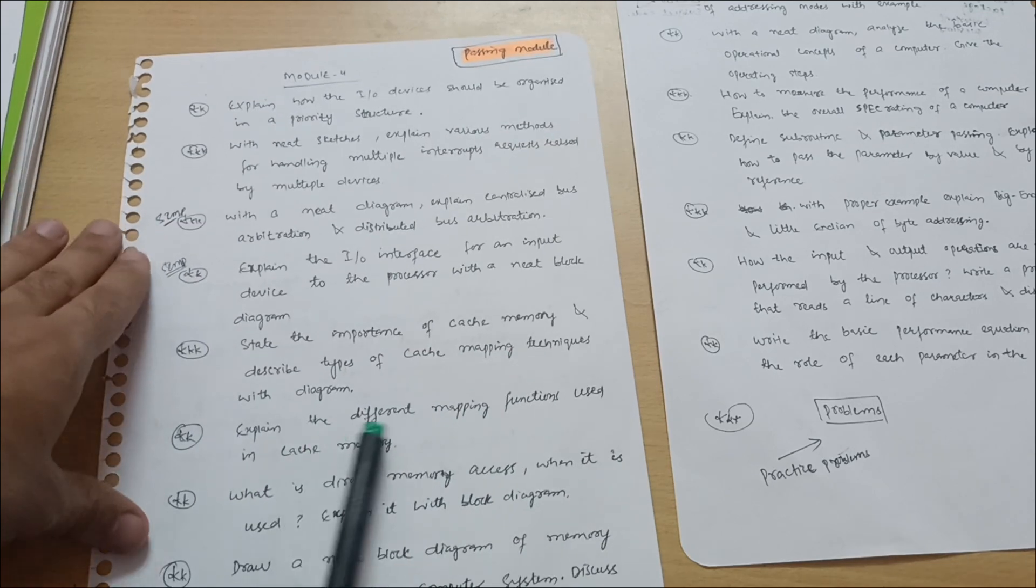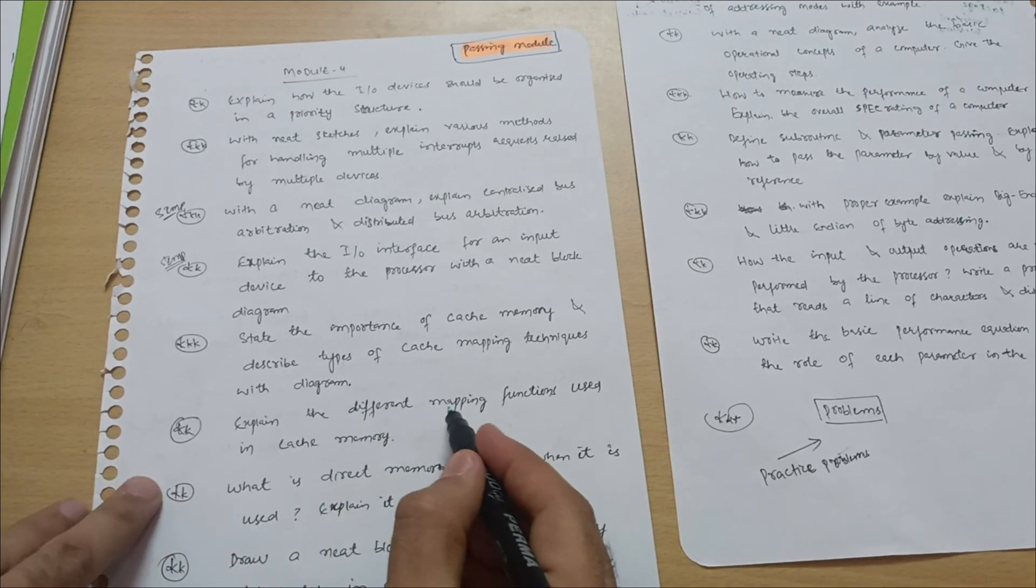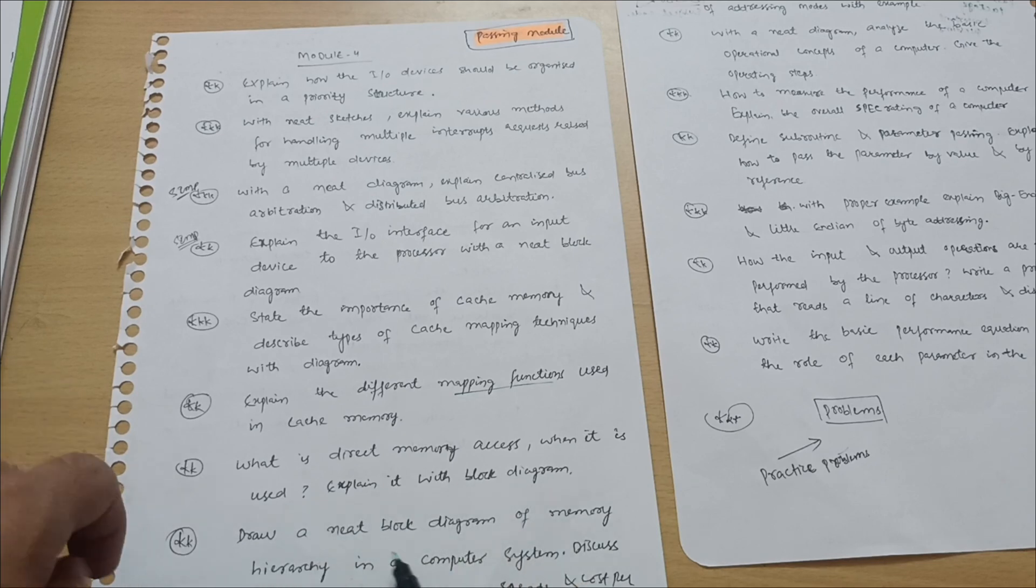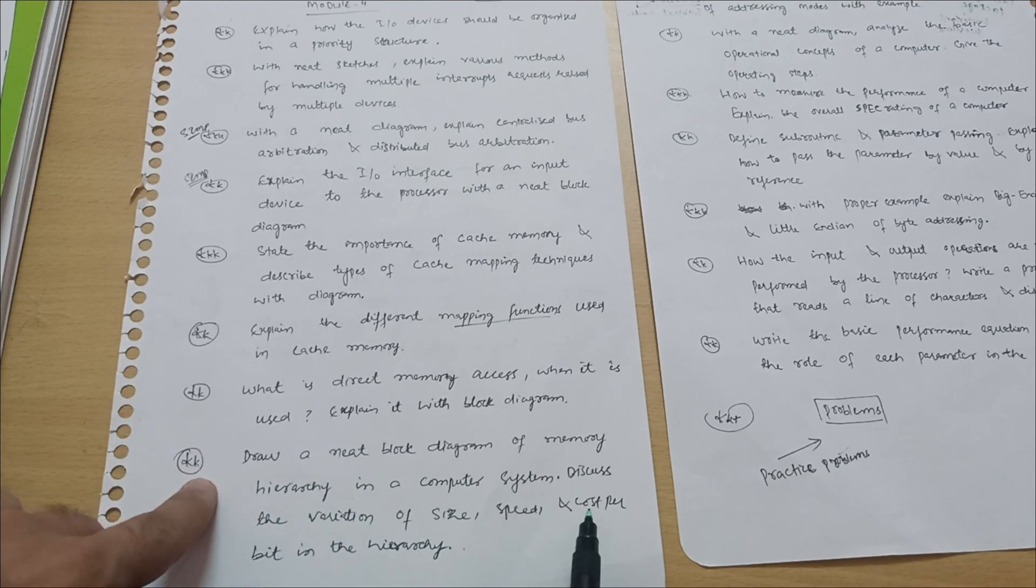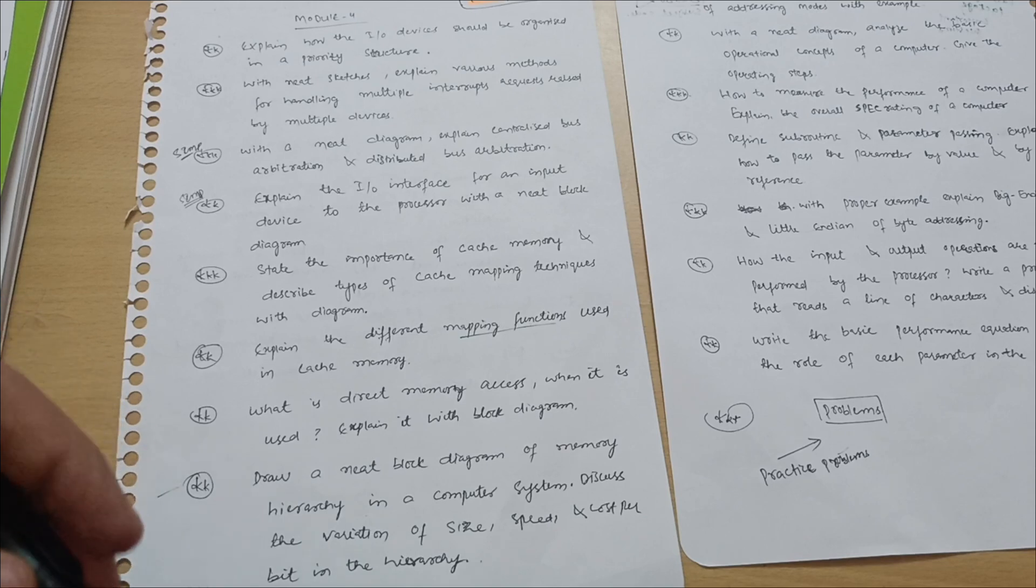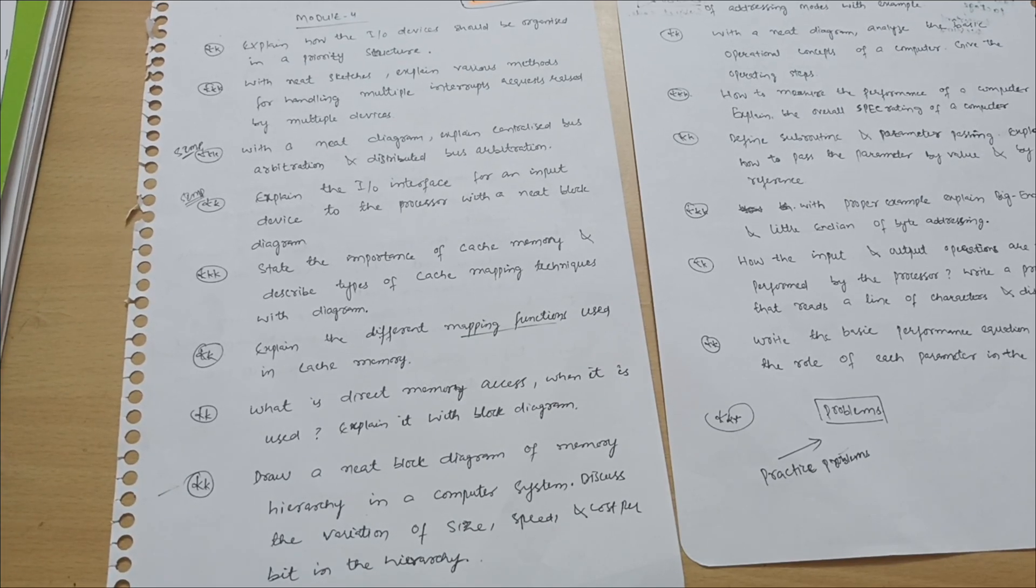State the importance of cache memory and describe types of cache mapping techniques. With the diagram explain the different mapping functions used in cache memory - very important one. What is the direct memory access DMA? When it is used? Explain it with the block diagram. Draw a neat block diagram of memory hierarchy in a computer system. Discuss the variation of size, speed and cost per bit in the hierarchy. This is all about module 4. This passing package will definitely give some idea about which questions you have to tackle, which questions you have to refer so that you can avoid the lot of unnecessary syllabus as there is a lot of syllabus.